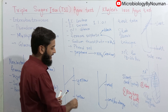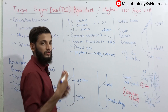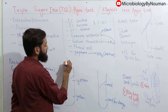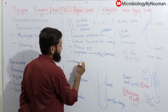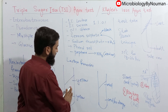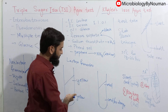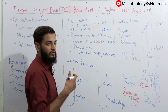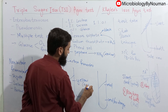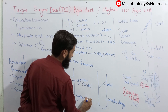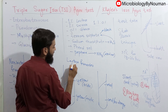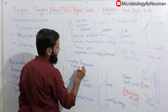The second possibility is yellow slant and yellow butt, which means the bacteria has fermented both glucose and lactose. So the bacteria that we have inoculated is a lactose fermenter. This bacteria has broken down both glucose and lactose, and due to acid production, phenol red will turn yellow. So there will be acidic conditions in both the slant and the butt. Examples of lactose fermenter bacteria of the Enterobacteriaceae family are E. coli and Klebsiella.